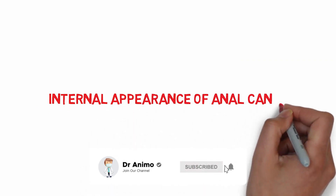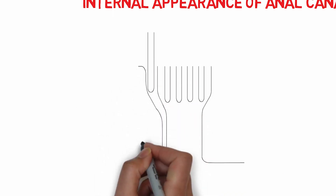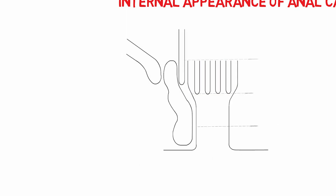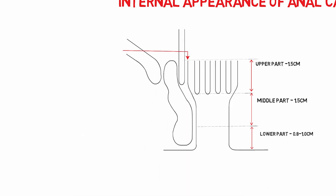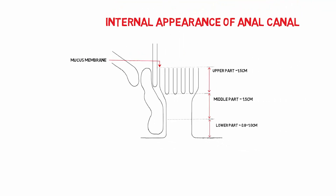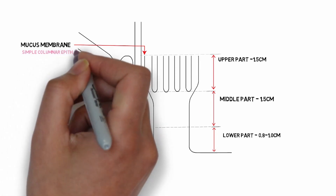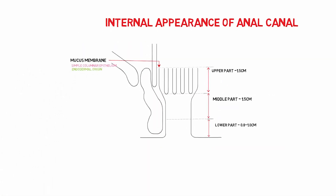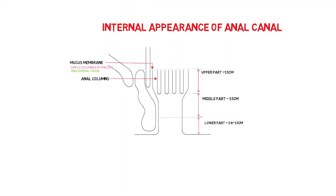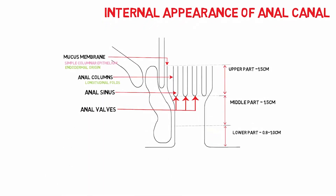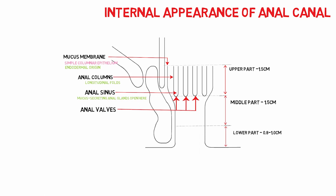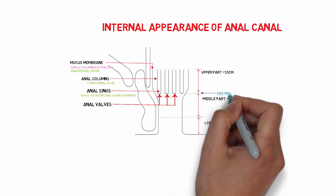The anal canal can be divided into three parts according to its internal appearance. The first 1.5 cm is the upper part, the second 1.5 cm is the middle part, and the terminal portion is the lower part. The upper part is lined by simple columnar epithelium with endodermal origin. The mucous membrane forms seven to eight longitudinal folds known as anal columns. The lower ends of the anal columns unite to form the anal valves. Anal sinuses are present above each valve, and mucus-secreting anal glands open into the anal sinuses. The anal valves together form a transverse line called the pectinate line.